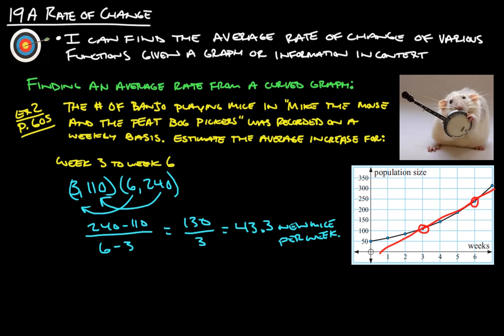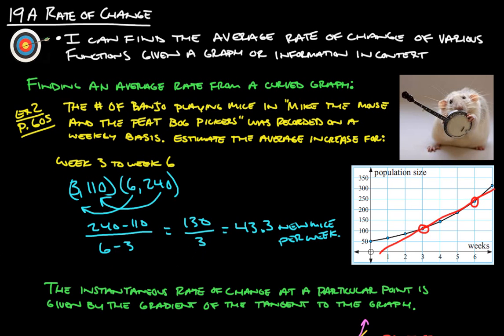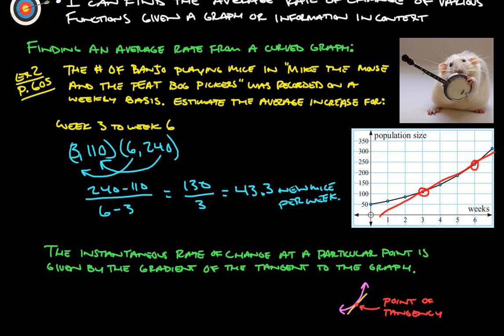And then one last thing to think about, because this is really what's kind of starting to get us into the calculus section here: the instantaneous rate of change at a particular point is given by the gradient or the slope of the tangent to the graph. So how fast it's growing at that exact second in time is this little tangent line here.